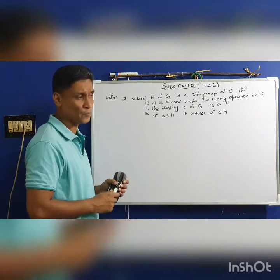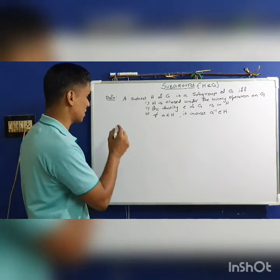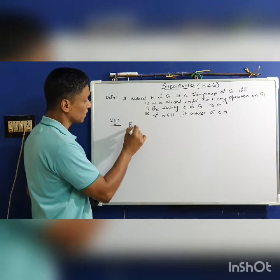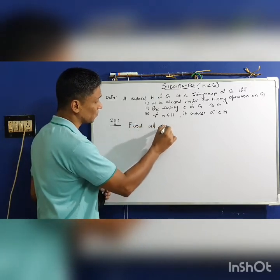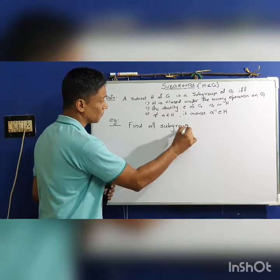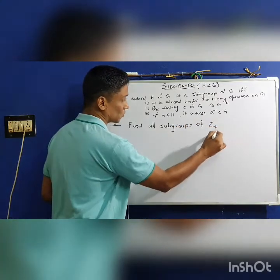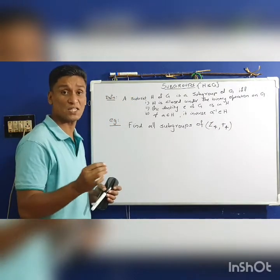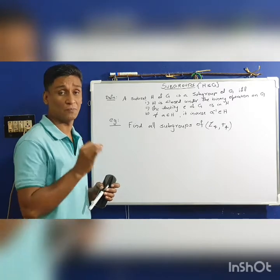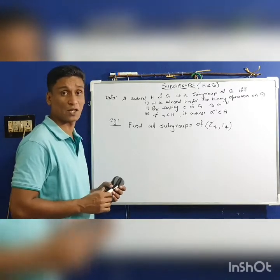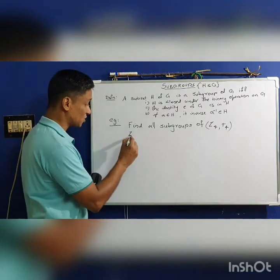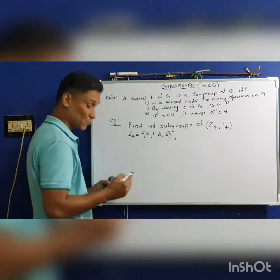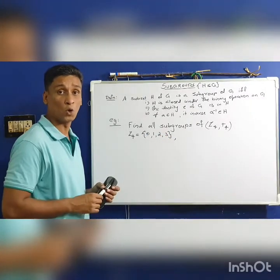Now we will do one or two examples. The first example is: find all the subgroups of Z4 under +4. Z4 is the set Z4 = {0, 1, 2, 3} and +4 is addition modulo 4.